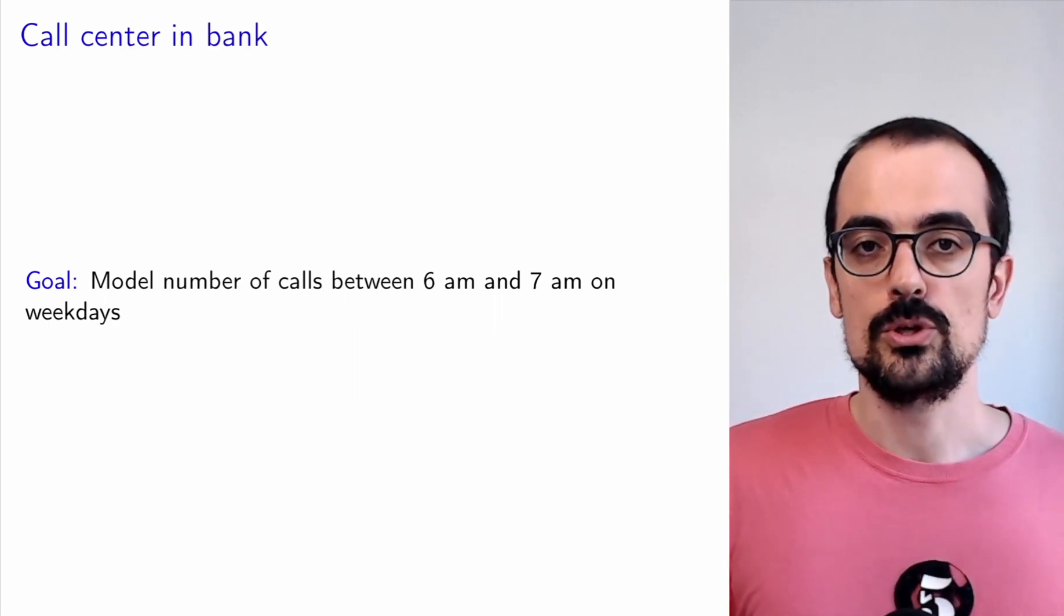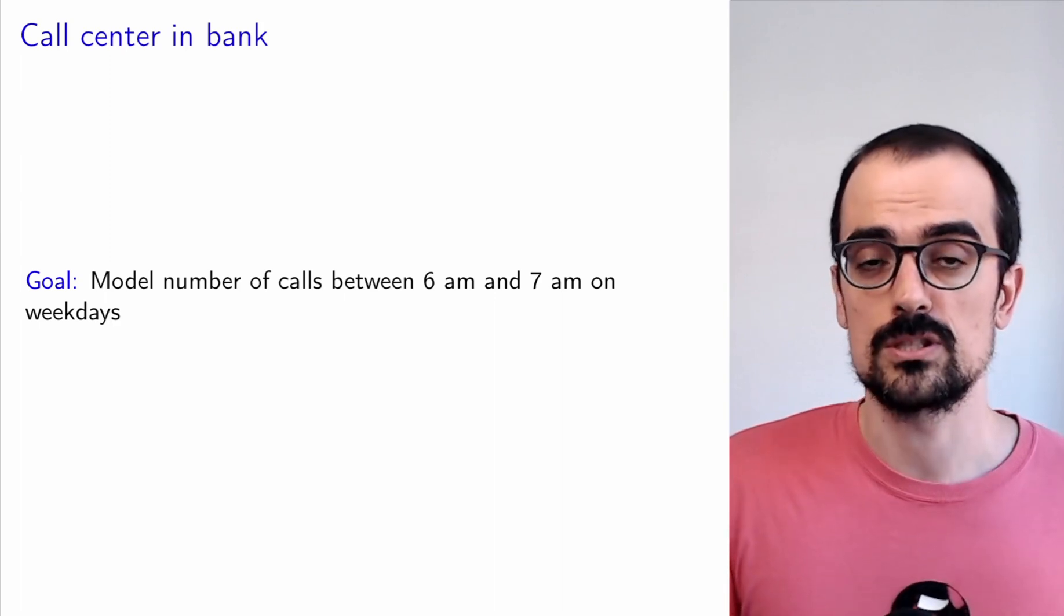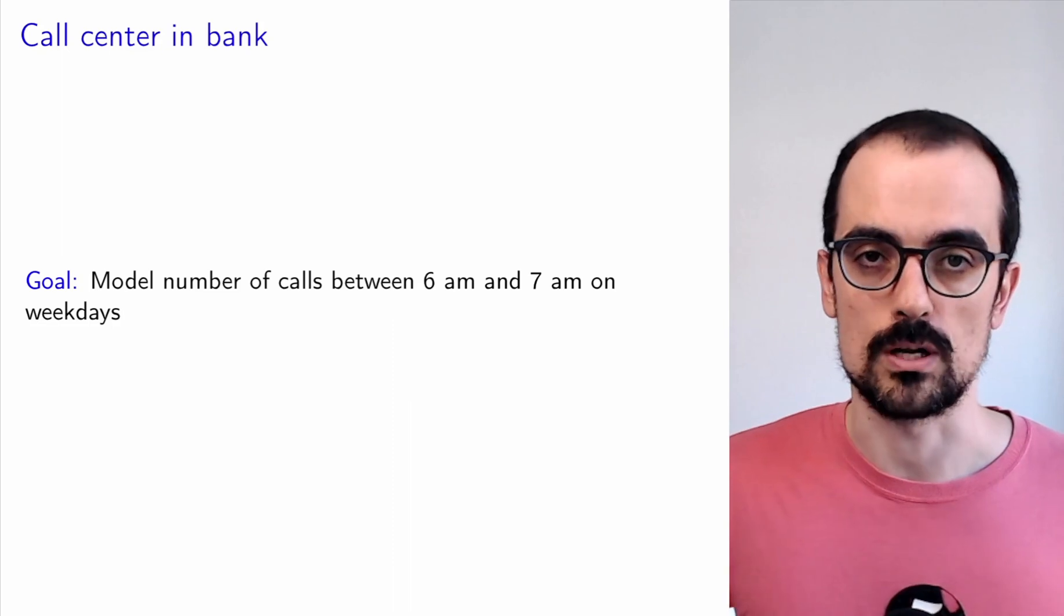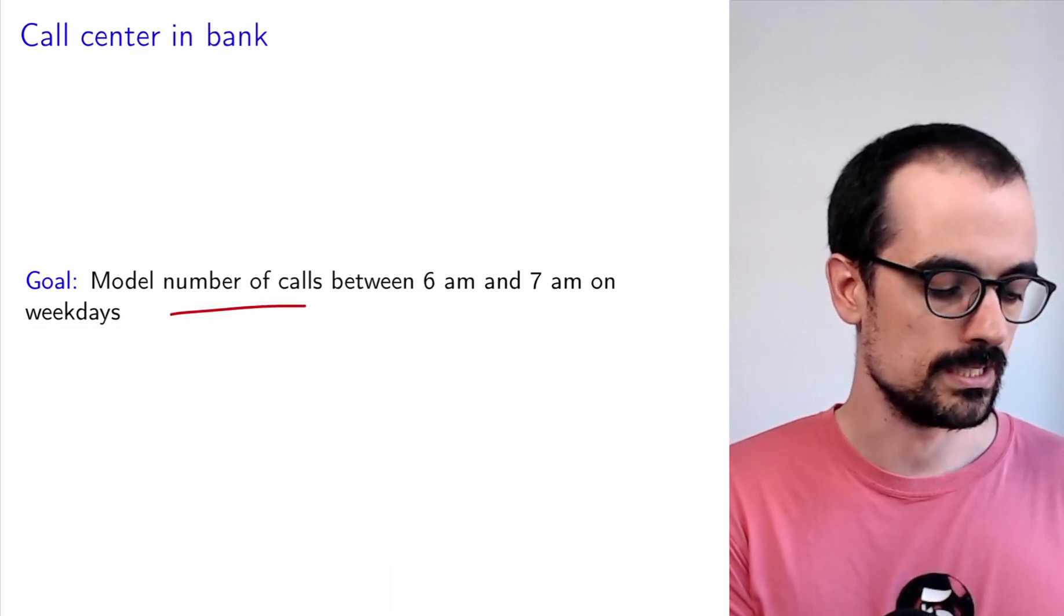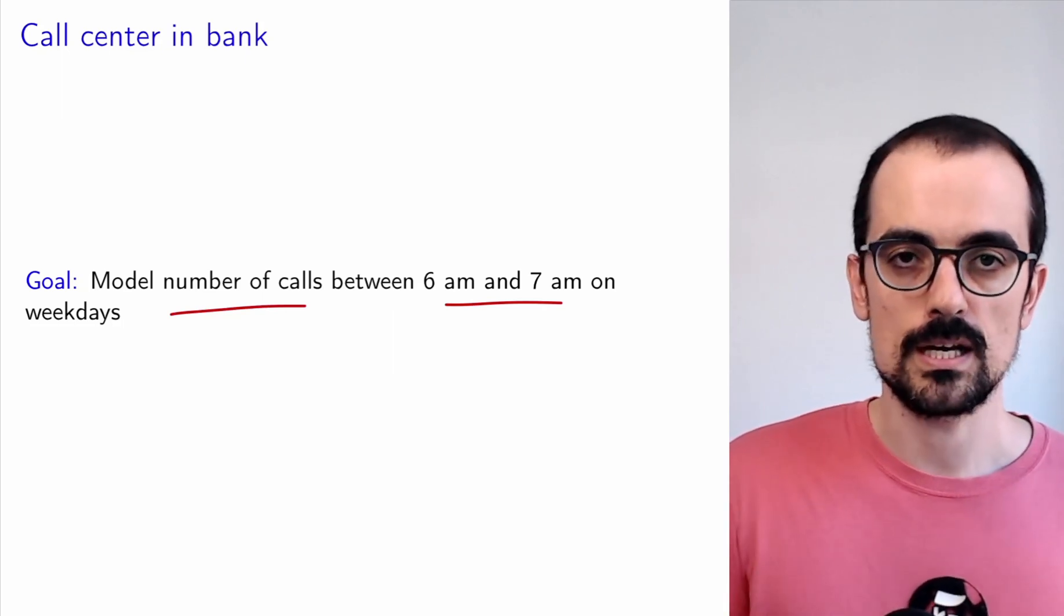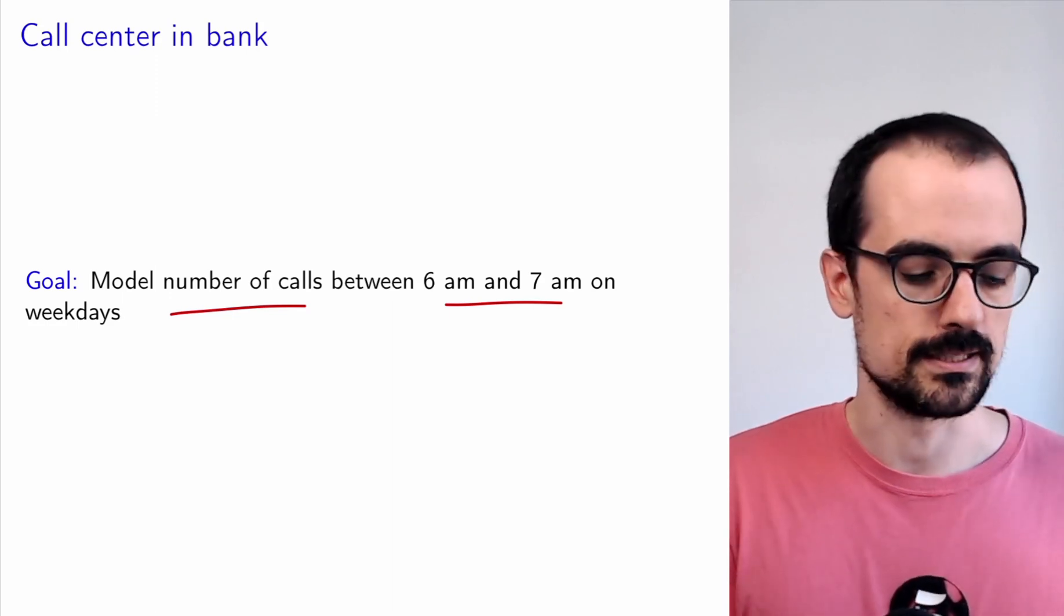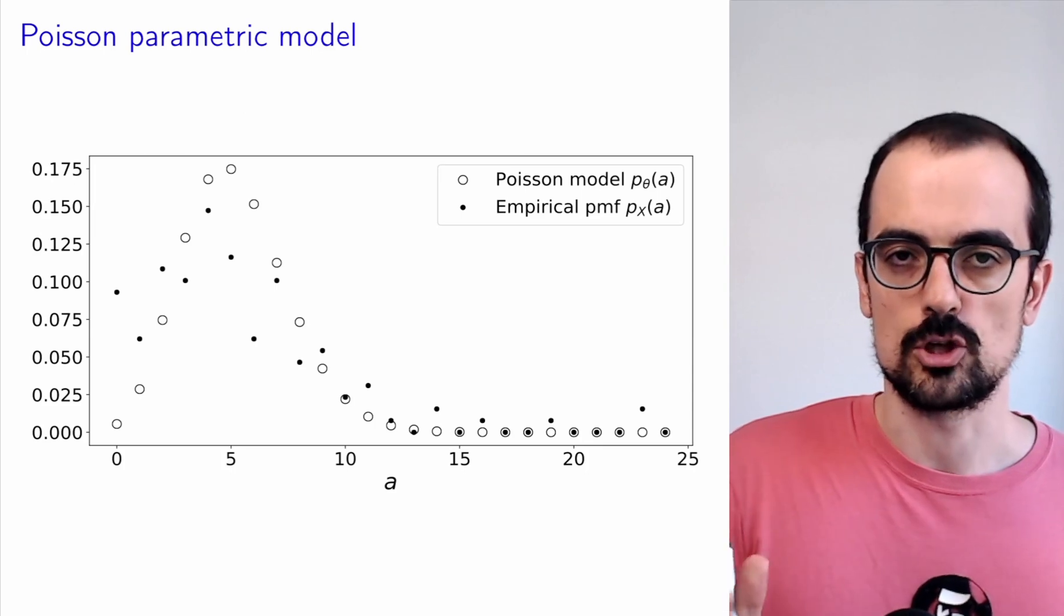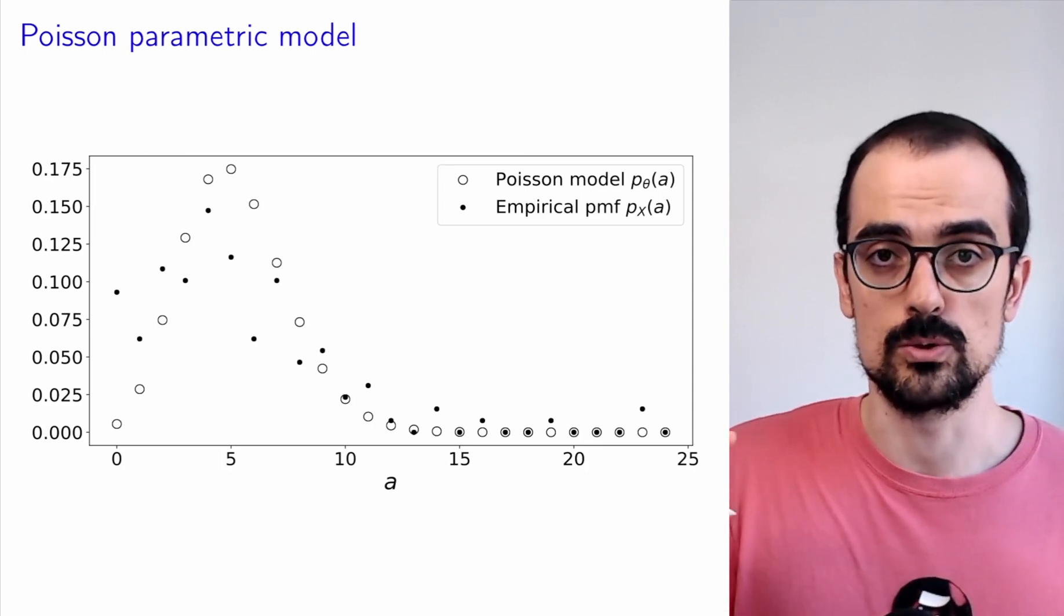So now we're going to use the Poisson distribution to model some real data. As I said, Poisson distributions are actually very commonly used to model things like telephone call arrivals, and that's exactly what we're going to do. We're going to model the number of calls between 6am and 7am on weekdays in a call center in a bank. This is a publicly available dataset.